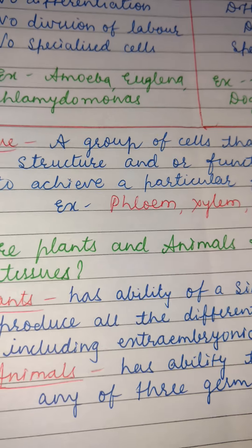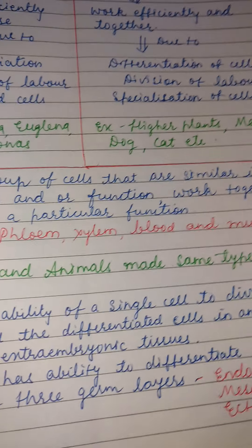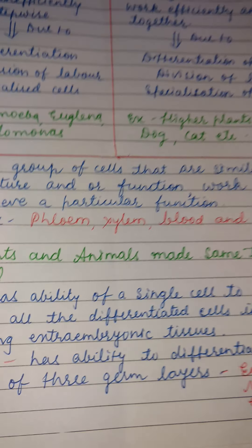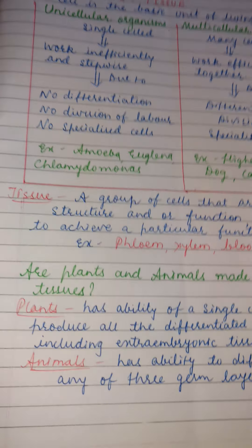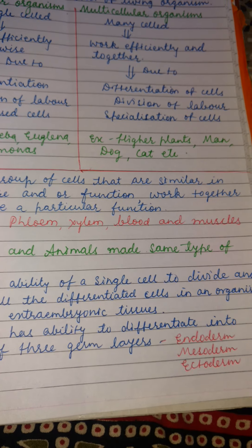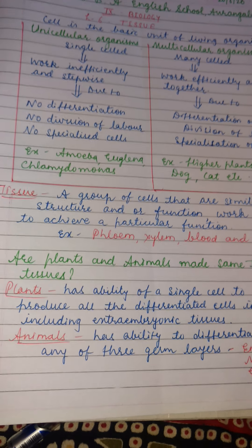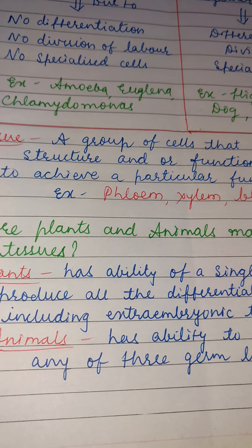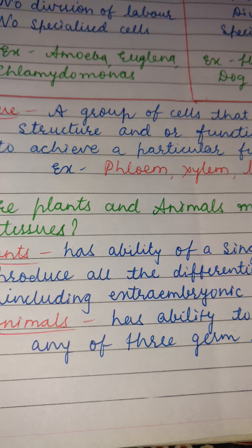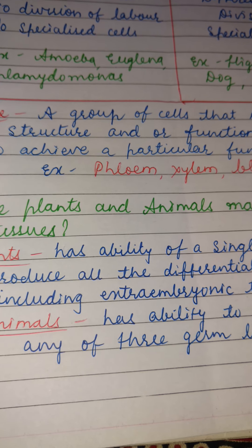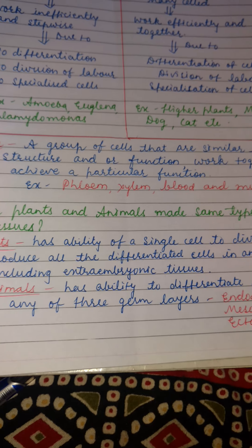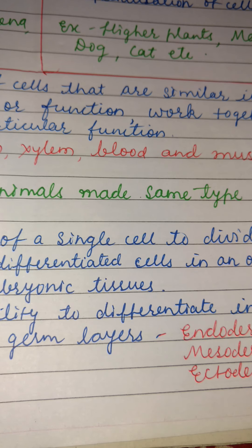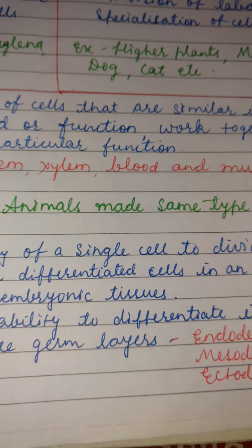Now, are plants and animals made up of the same type of tissue? No. Plants have the ability of a single cell to divide and produce all the differentiated cells in an organism, including extra-embryonic tissue. When the zygote forms by the fusion of male and female gametes and then re-divides, it forms an embryo. In animals, they have the ability to differentiate into three germ layers: the endoderm, mesoderm, and ectoderm.